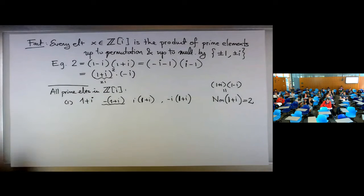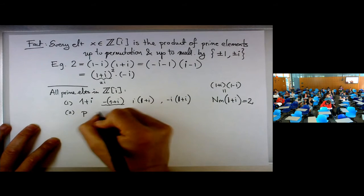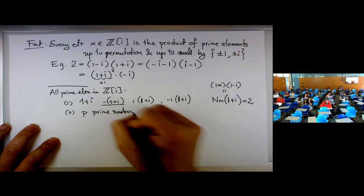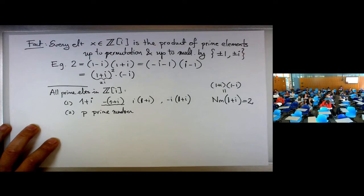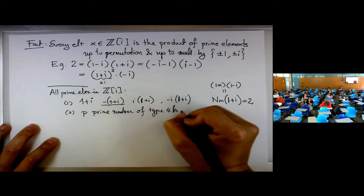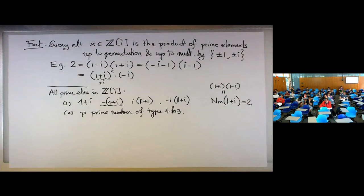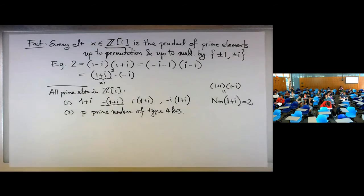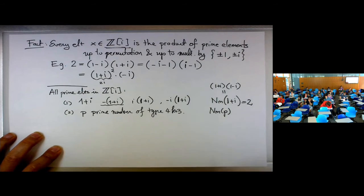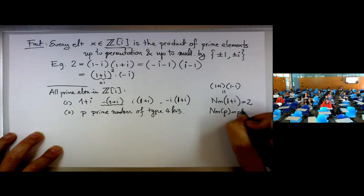What are the other primes? If p is a prime number of the form 4k + 3, then p is actually a prime element in the bigger ring Z[i]. Whenever I write p, I also mean minus p, ip, and minus ip. The norm of such a prime element p is p squared.